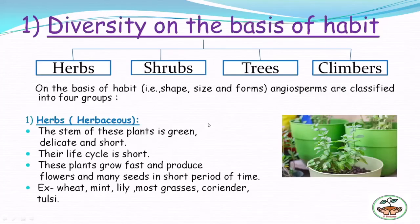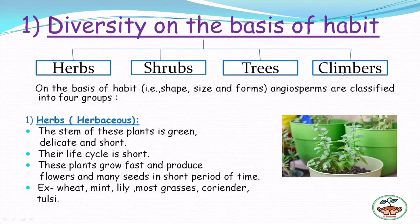So we have seen diversity on the basis of habit: herbs, shrubs, trees, and climbers. Herbs are delicate plants that hardly attain a height of more than one meter and complete their life cycle very fast. Shrubs have woody stems and are larger than herbs but shorter than trees. Trees are larger than shrubs, have a prominent main trunk, and live for many years. Climbers have weak stems and need support to grow.